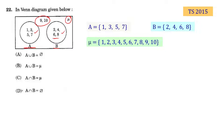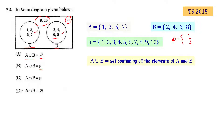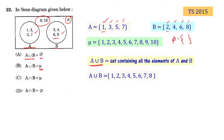Now we have to find what is A union B, and whether A union B is an empty set. A union B is the set containing all the elements of A and B. A alone elements are 1, 3, 5, 7. B alone elements are 2, 4, 6, 8. So A union B is 1, 2, 3, 4, 5, 6, 7, and 8.